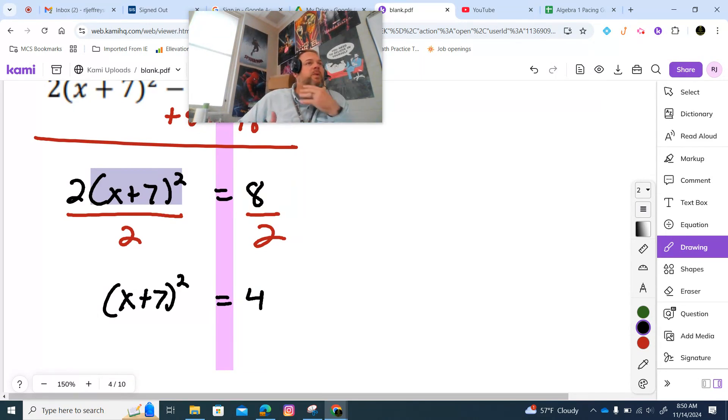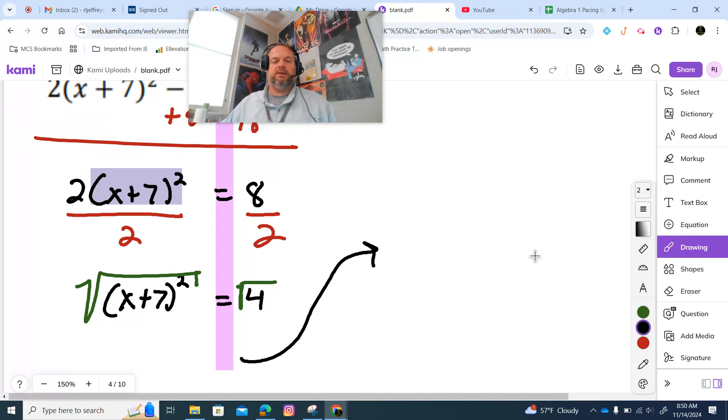Now we're kind of back to where we were in the first example. Alright. How do we undo the squared term? Square root. I'm going to pick this up over here. So we're going to have x plus 7 equals plus or minus the square root of 4.